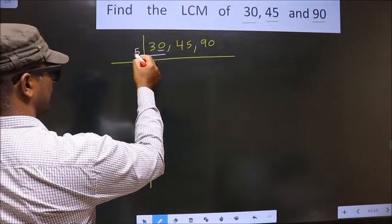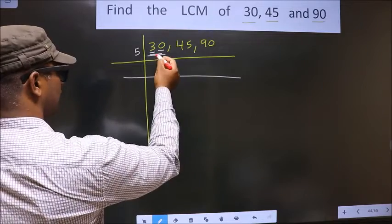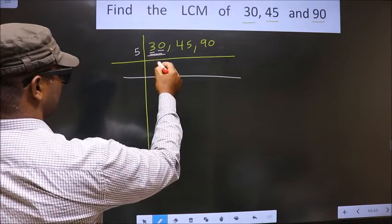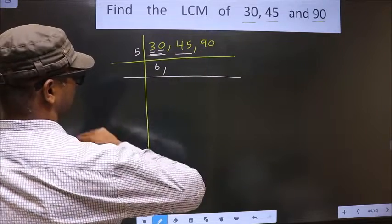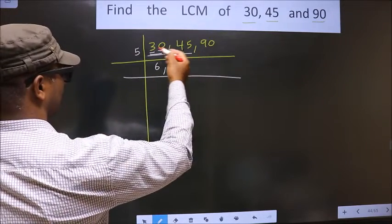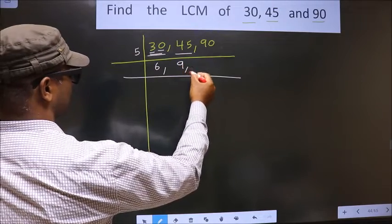So we take 5 here. Now when do we get 30 in 5 table? 5, 6, 30. Now other number is 45. When do we get 45 in 5 table? 5, 9 is 45.